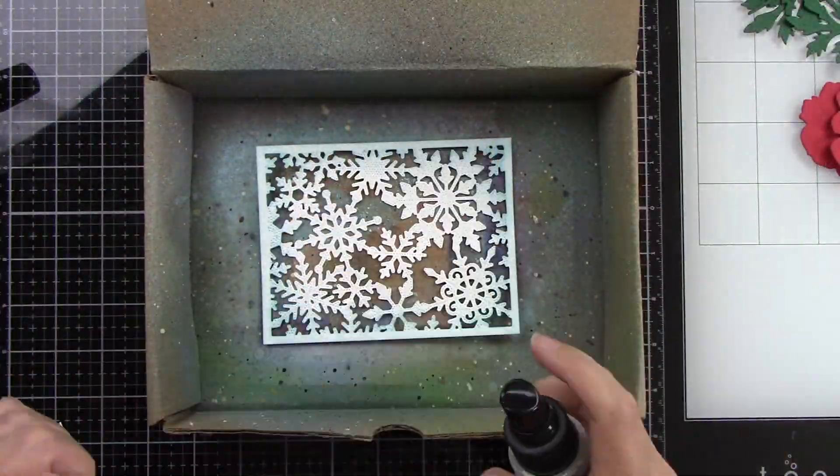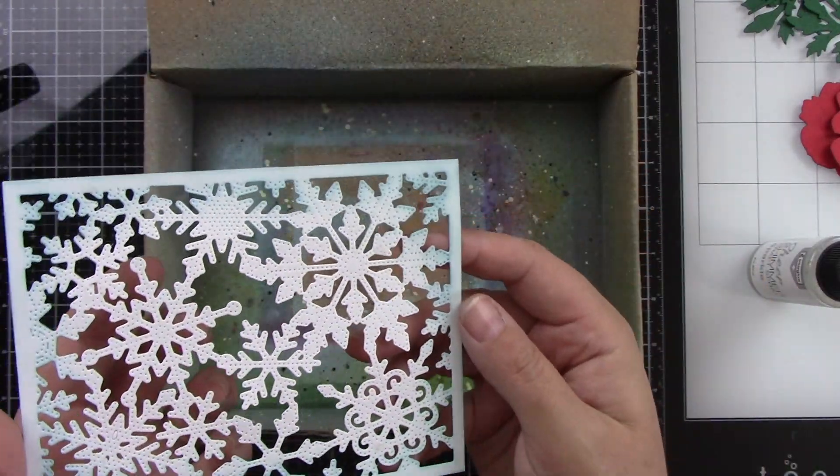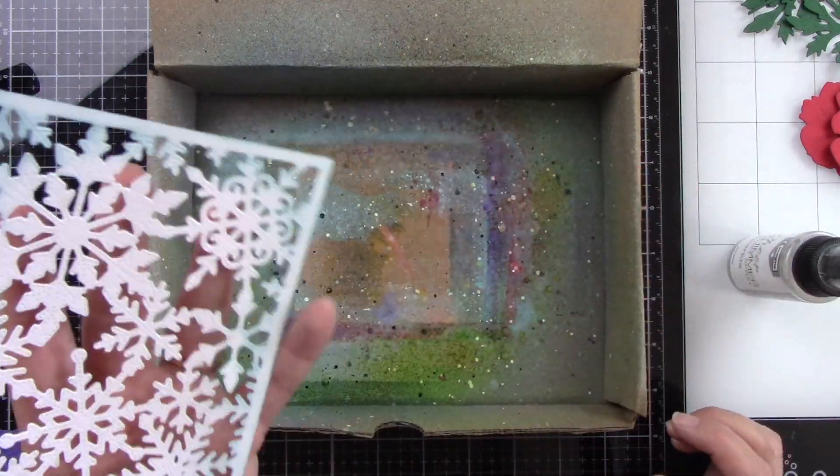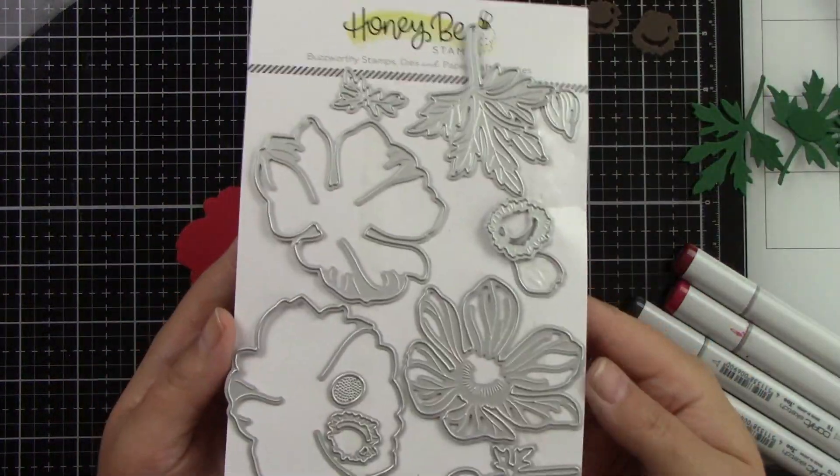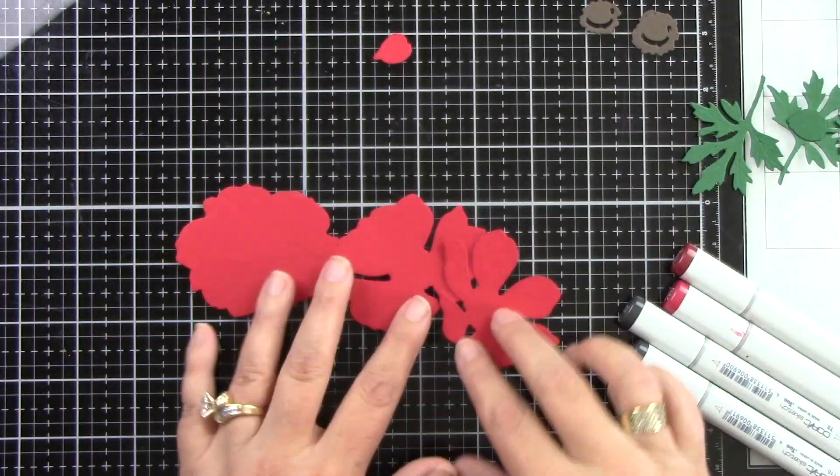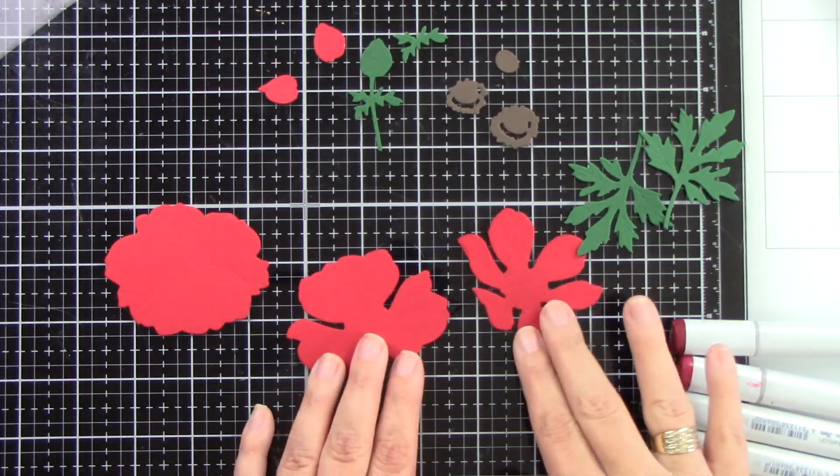I'm going to come in with a shimmer spray and add some nice shimmer detail which I don't know that you can see on camera very well, but it just really adds a lot of shimmer to the background. Now here is that beautiful Lovely Layers Anemone die. So you have one large flower, you've got some greenery, you have your bud and then you have your centerpieces.